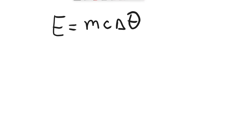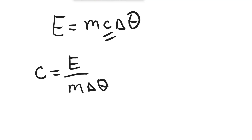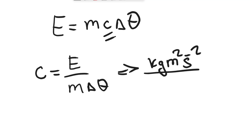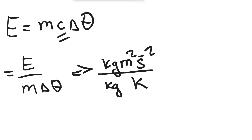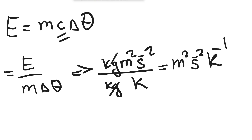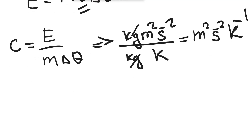Specific heat capacity c is given by energy divided by mass times the change in temperature. Energy is kg m² s⁻²; mass is in kilograms and temperature change in kelvin. The kilograms cancel, leaving the base unit as m² s⁻² K⁻¹.